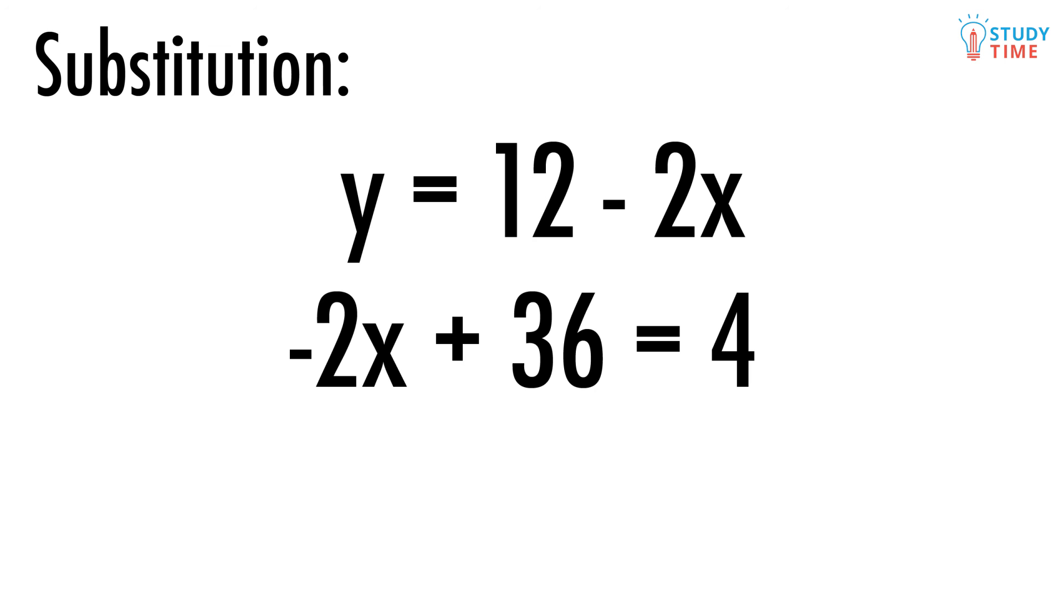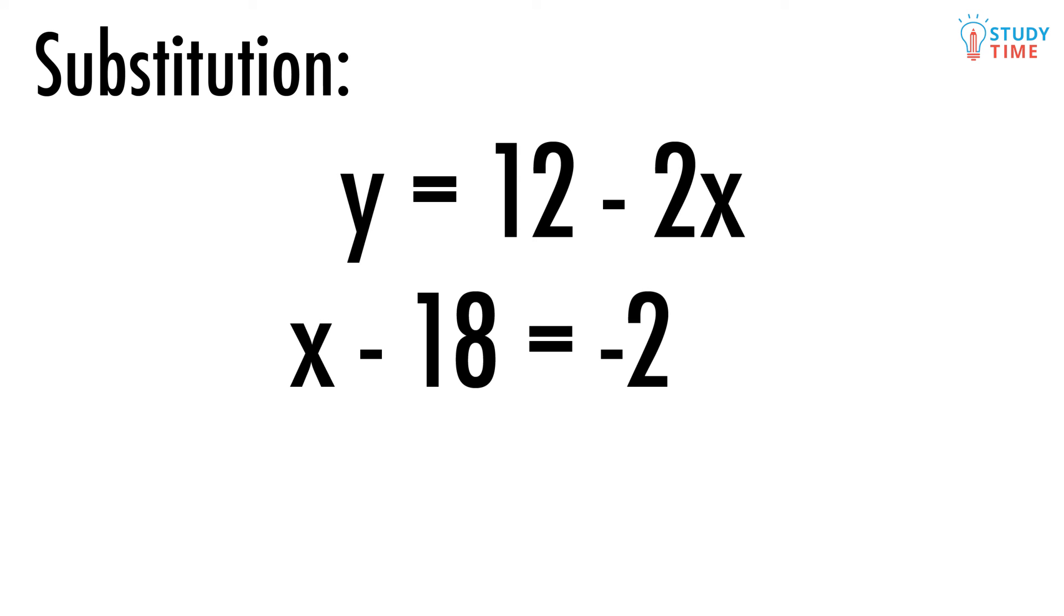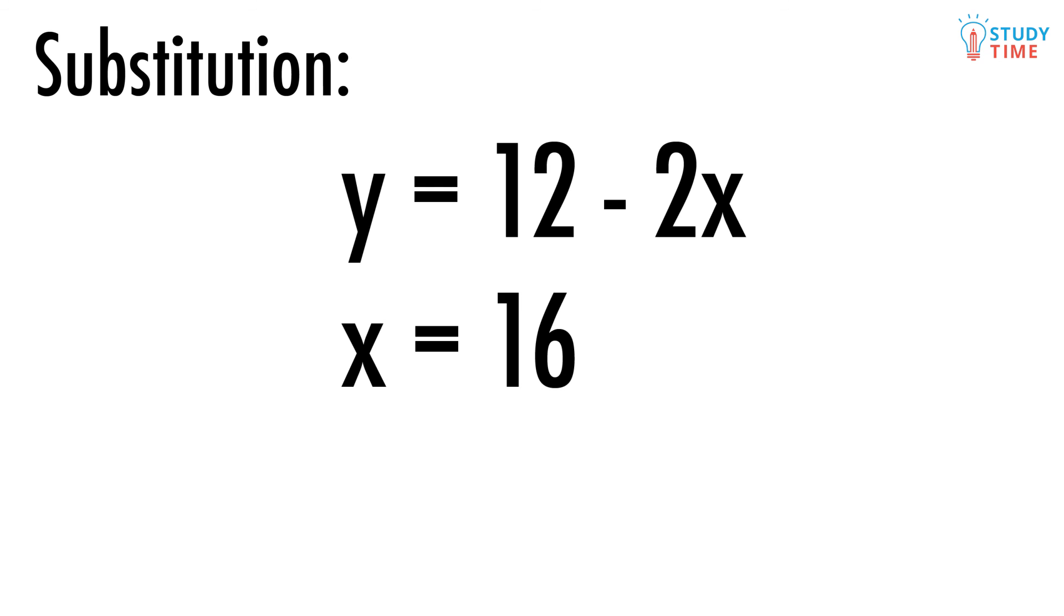Now we need to divide everything by that pesky negative 2, giving x minus 18 equals negative 2. And then we'll add 18 to both sides. How about it? We got x equals 16, same answer as before. Phew. Now is the moment we're going to plug in x equals 16 into one of the equations to see that y equals negative 20.